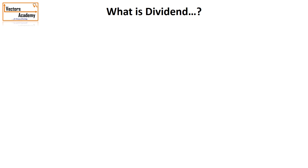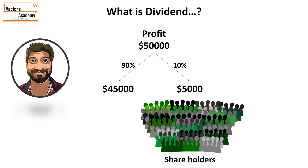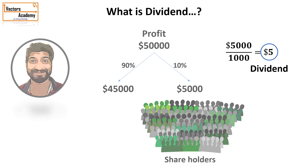Now let's understand dividend more clearly. The company is in profit and ten percent of the company has been sold. Ten percent of fifty thousand comes out to be five thousand dollars, which is to be distributed among the shareholders. There are a thousand different shares, so each share attracts five dollars. That five dollars is the portion of profit the company pays to shareholders, and it is called the dividend.